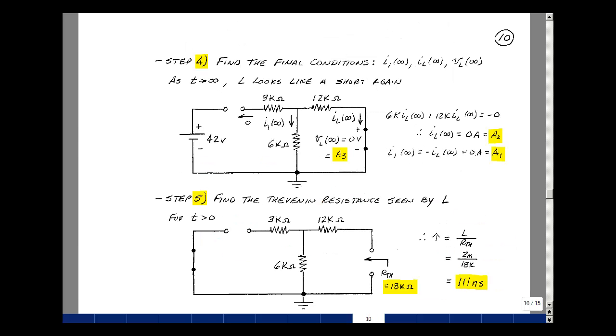So as time approaches infinity, or really five time constants, the inductance will become a short circuit again. Let's go around this loop and determine the voltages. So this current is flowing in this direction. So I've got drop across here plus the drop across here.